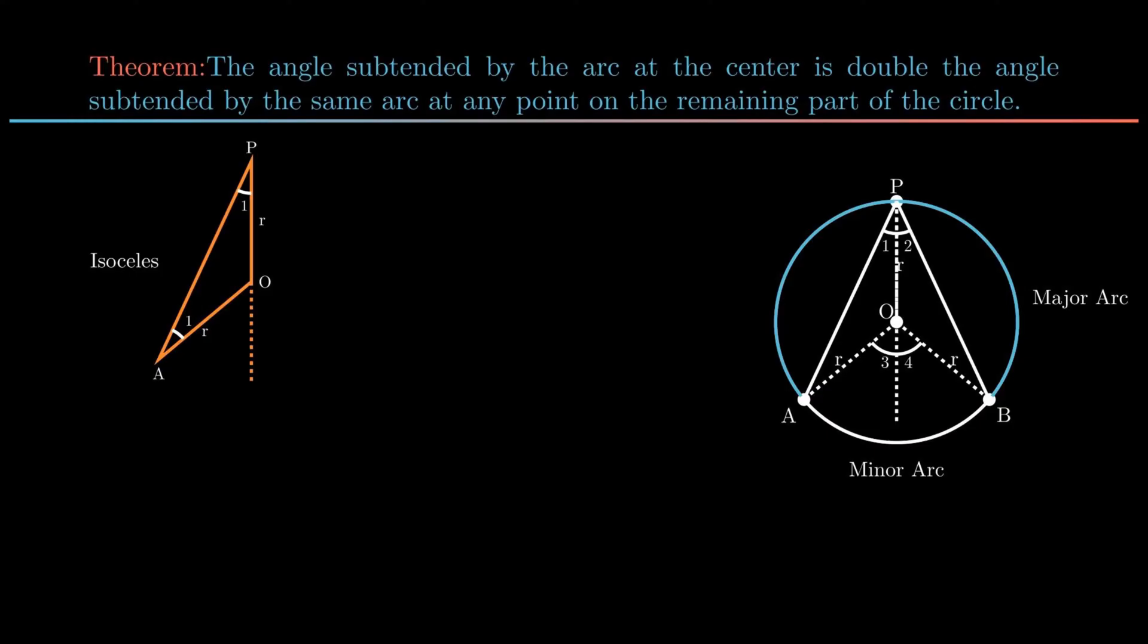Further in a triangle the exterior angle is equal to the sum of interior opposite angles. Therefore angle 3 can be expressed as twice of angle 1. Similarly in isosceles triangle BOP, angle 4 can be written as twice of angle 2.